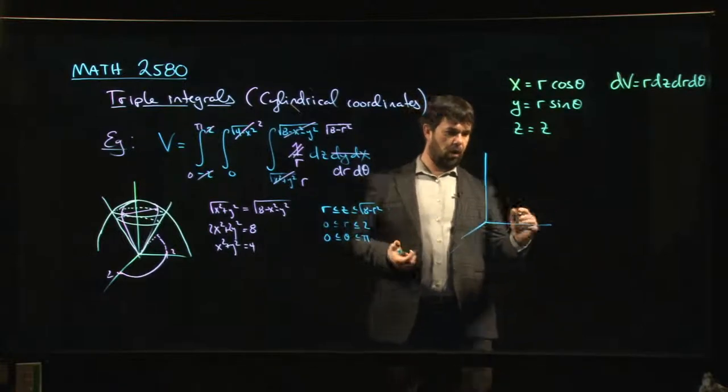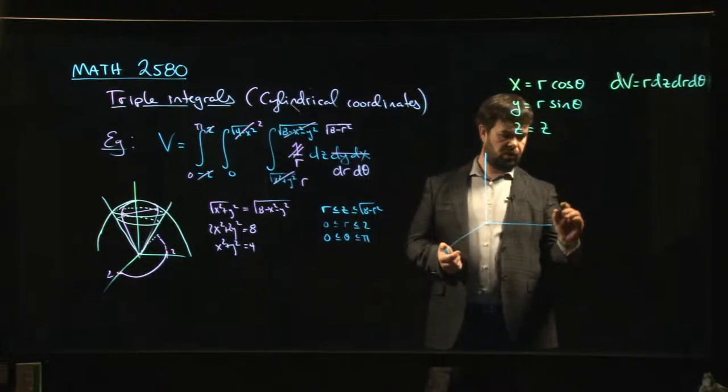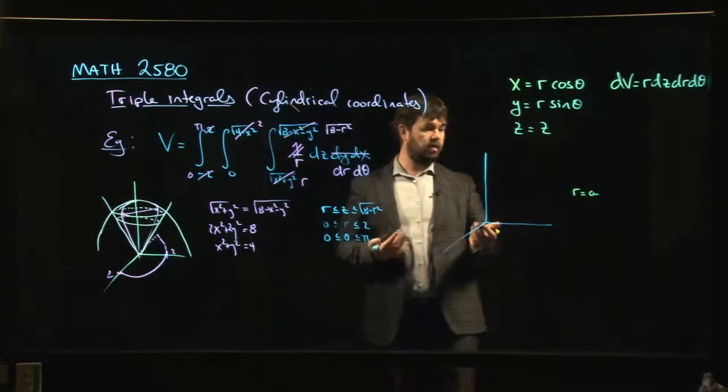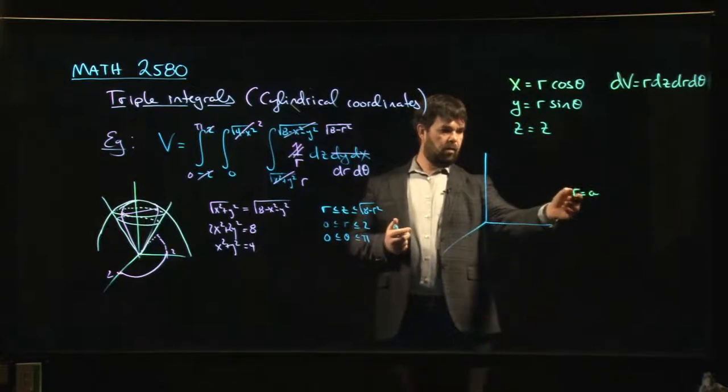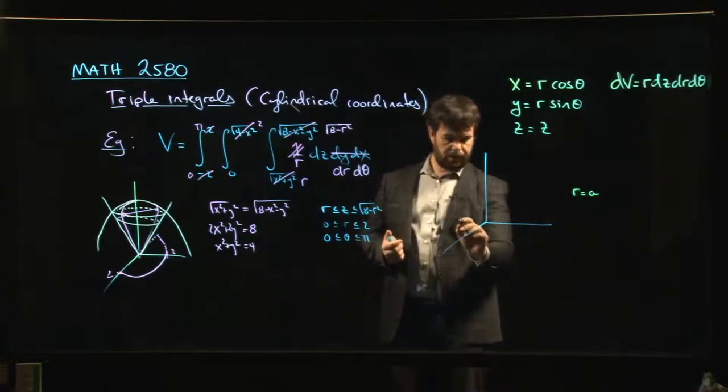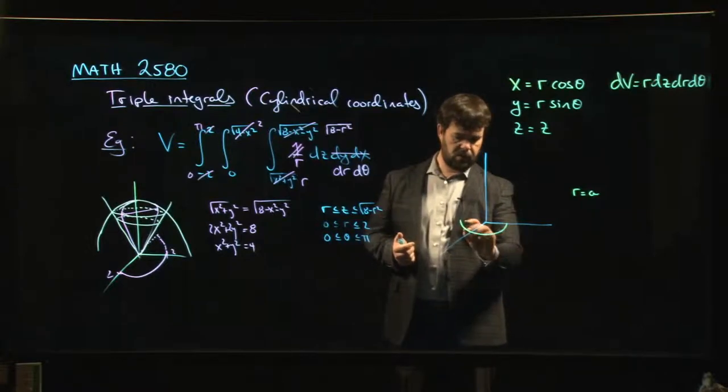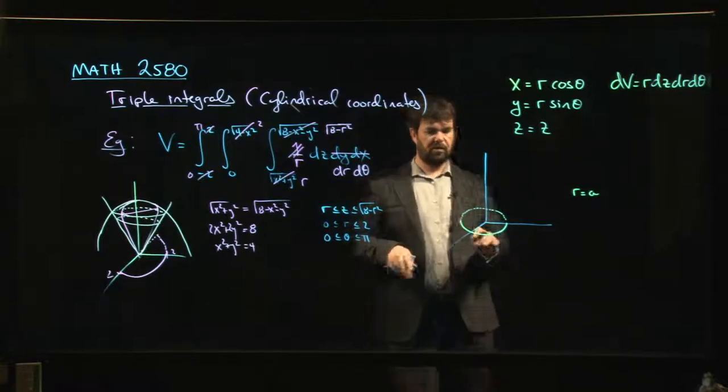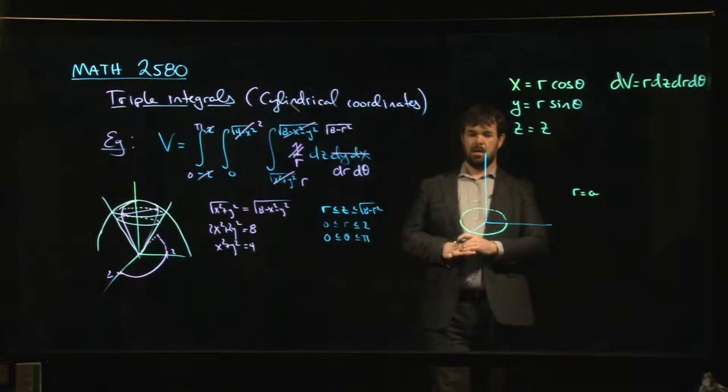First, you give a value for r. So you say, I'm going to choose r is equal to a. So what does r equal to a look like? Well, remember this in polar coordinates is just a circle of radius a. So we draw a circle of radius a centered at the origin. I'm going to leave that dashed for reasons that will become apparent fairly soon. But it doesn't say anything about z.